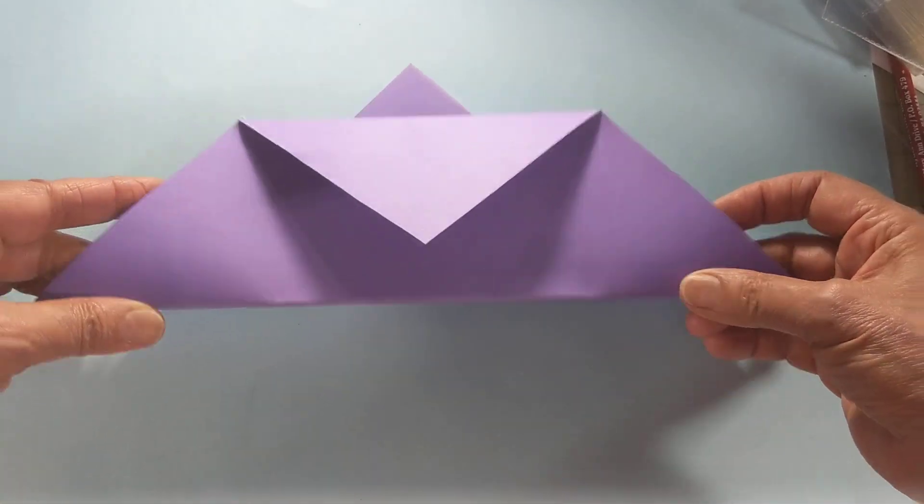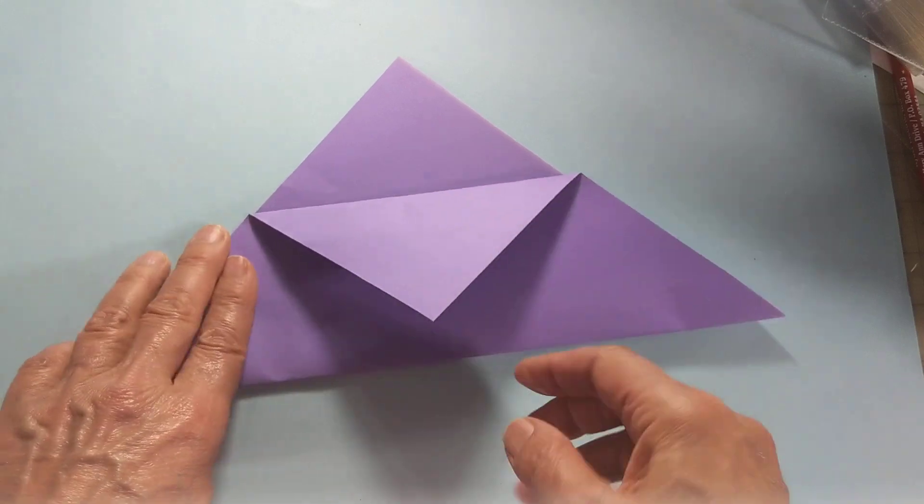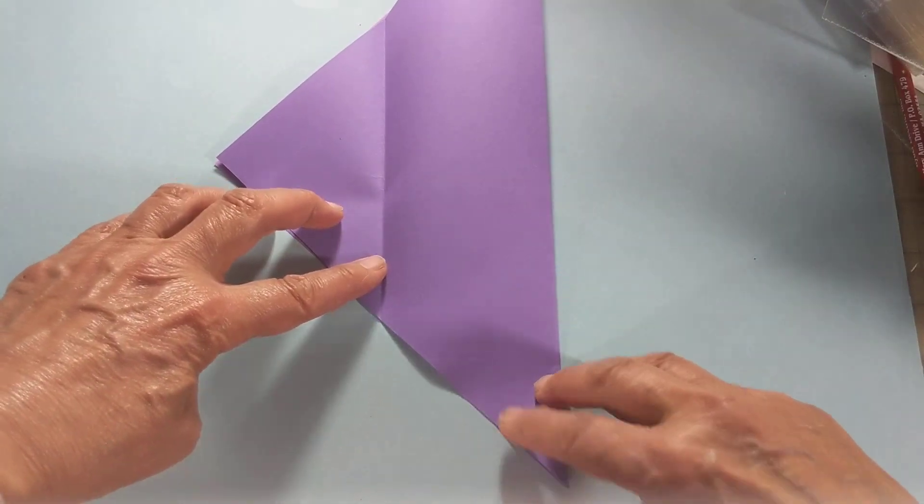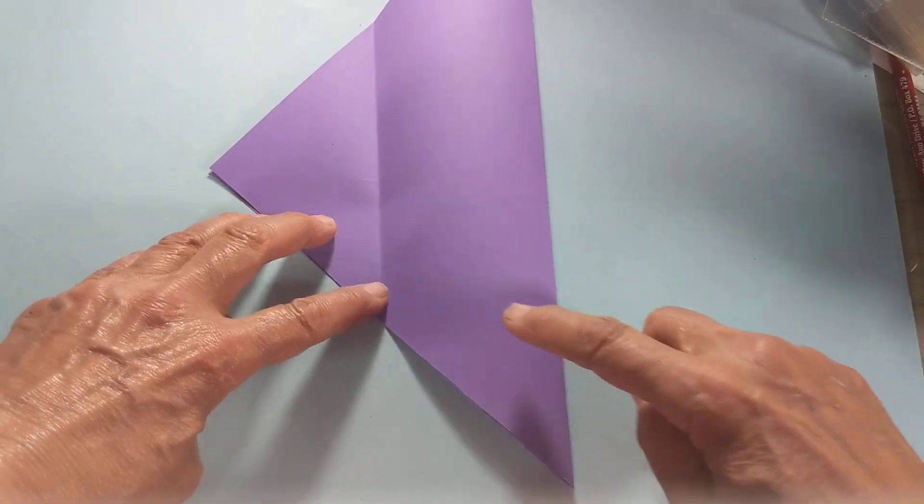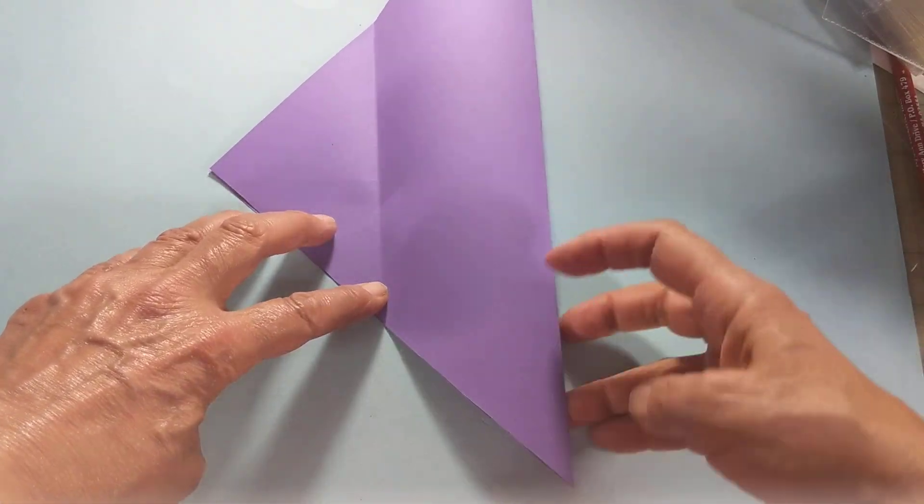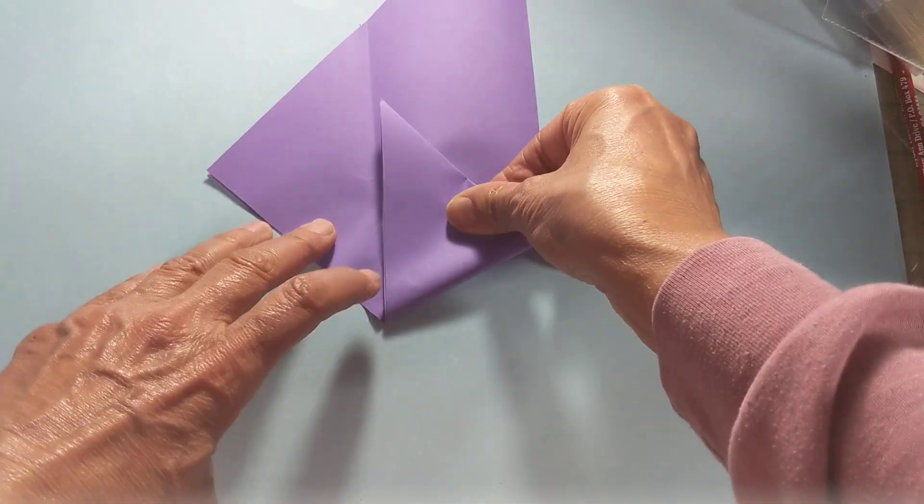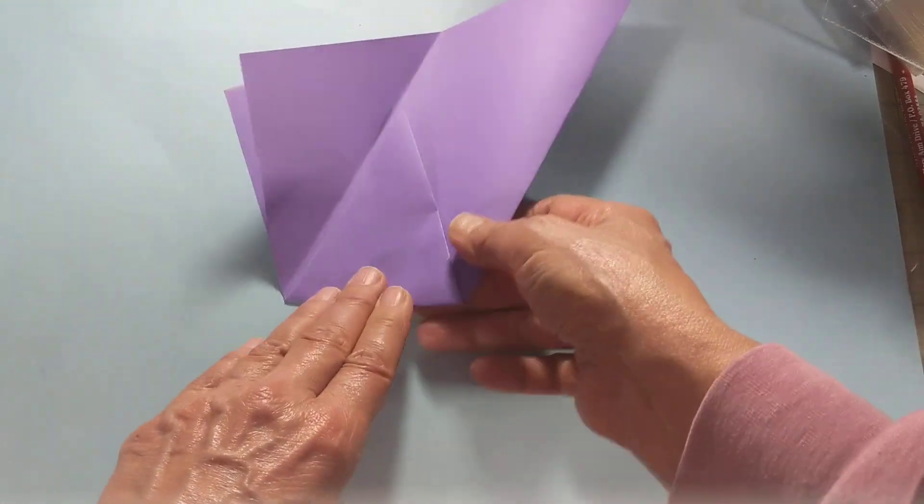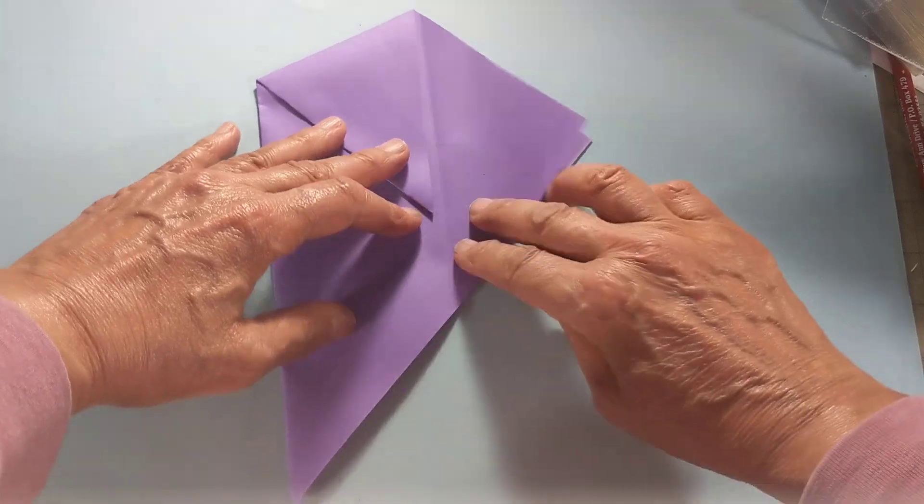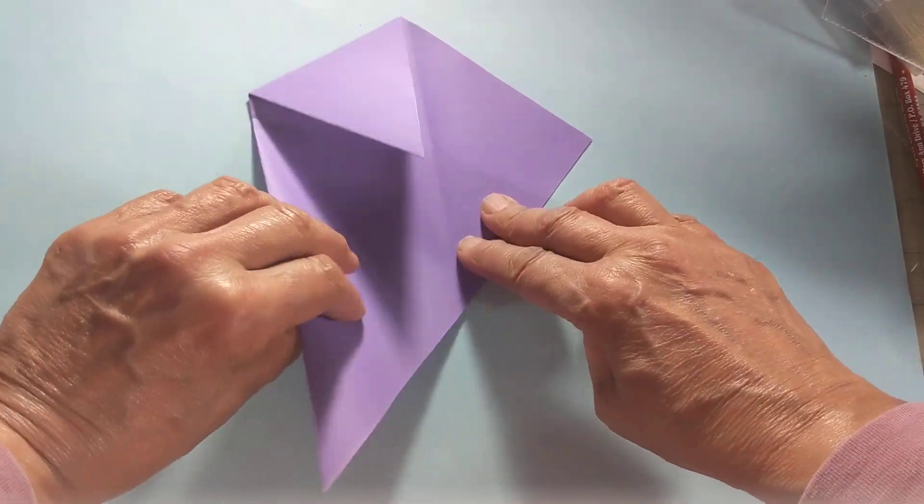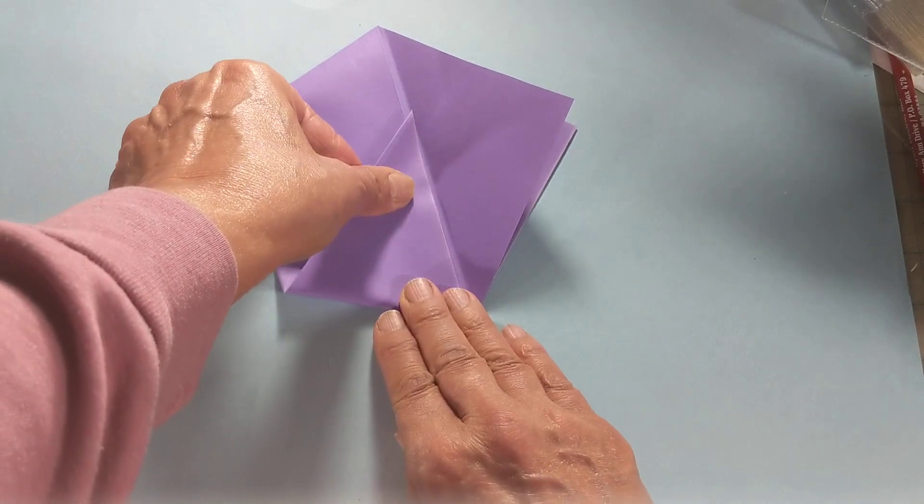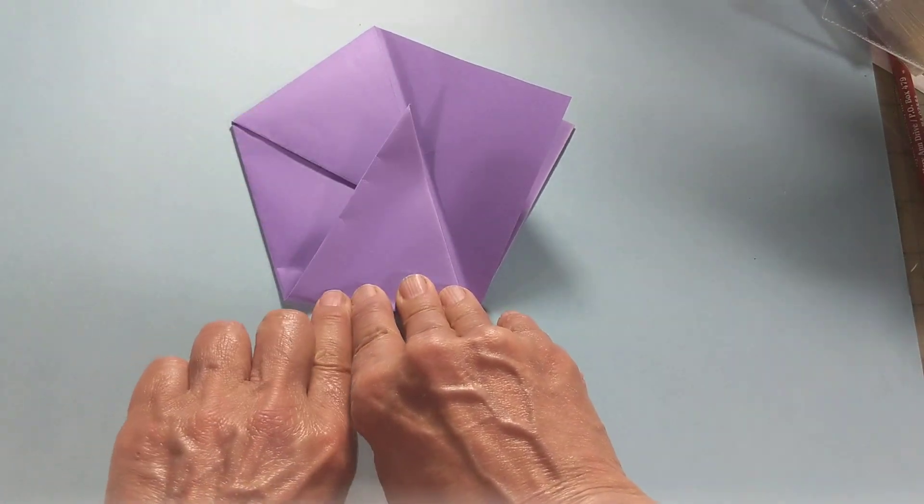Next step, open this up. I'm going to take this edge and line it up with this fold line, so this edge comes to that fold line like that. Put a triangle here. Same thing over here, bring the edge up to the fold line.